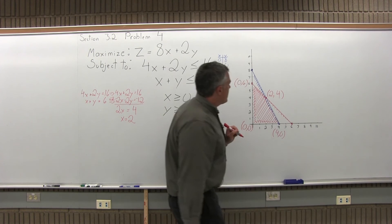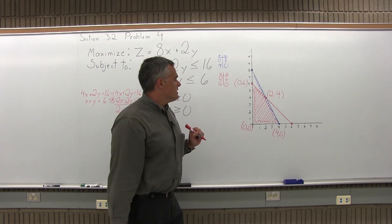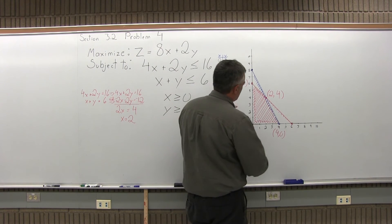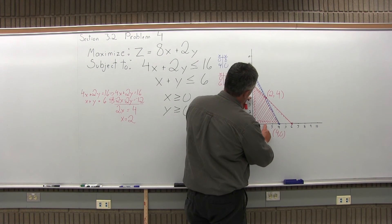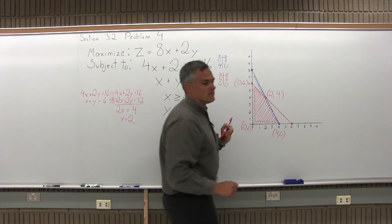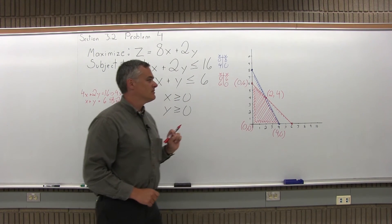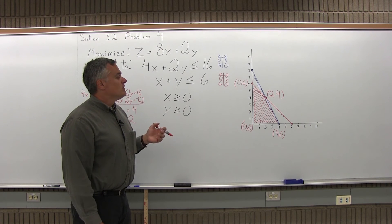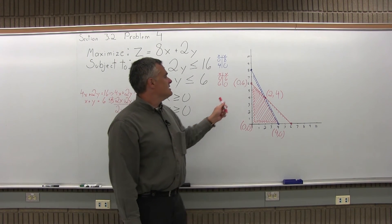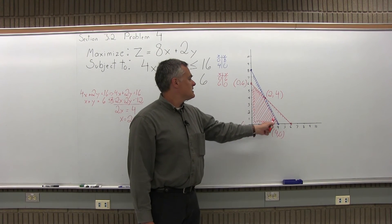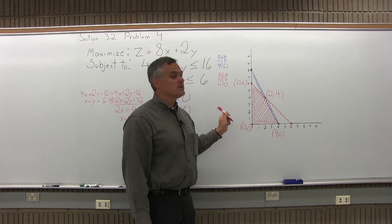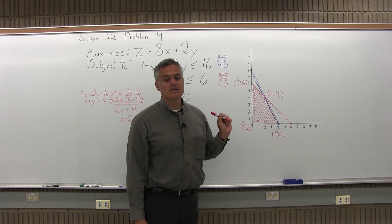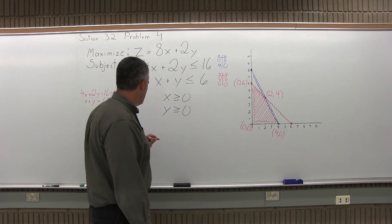So now I have all my corner points. Because I drew this with a ruler, over 2 up 4 looks very accurate. Step 2 of my four-step process — label the corner points — is done. Step 3 is fill in the chart.